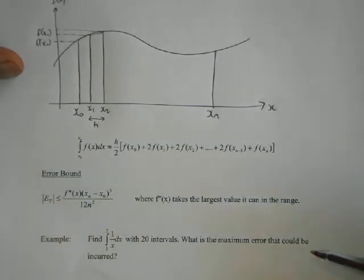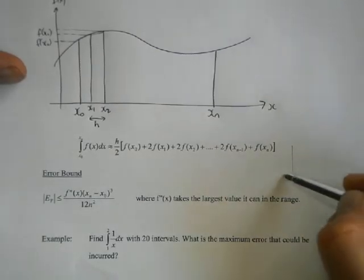So n is the number of strips, n squared on the bottom line. Big n, small error.